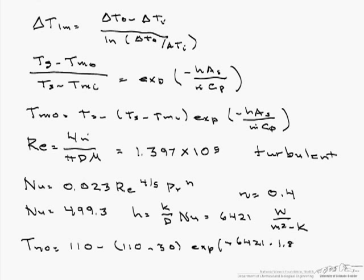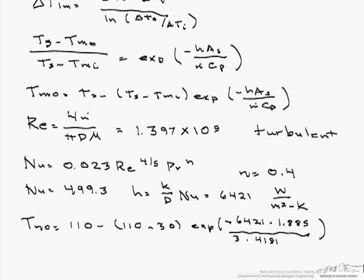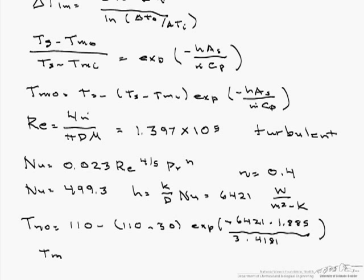and we divide this by the mass flow rate, which is 3 kg per second times that Cp, and when we finish calculating, our Tm out is going to equal 79.5 degrees C.